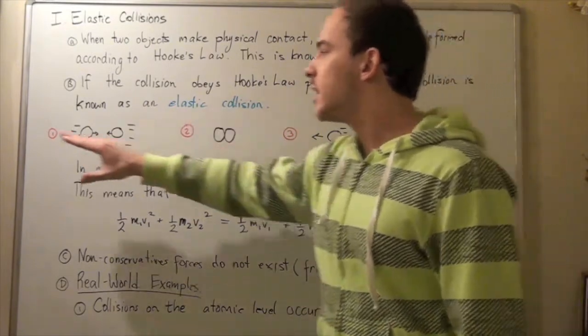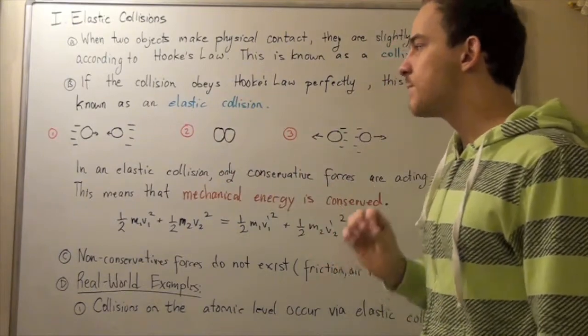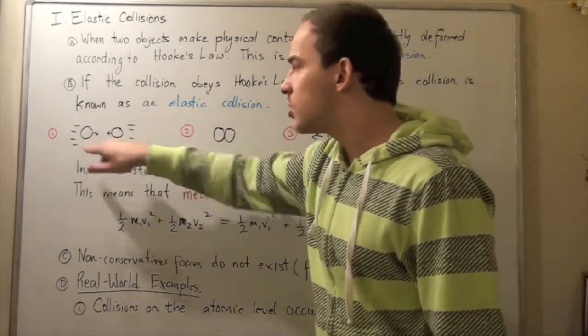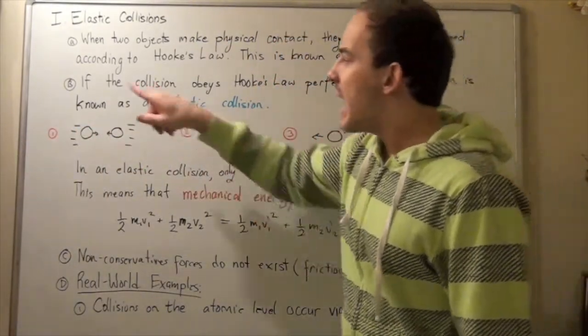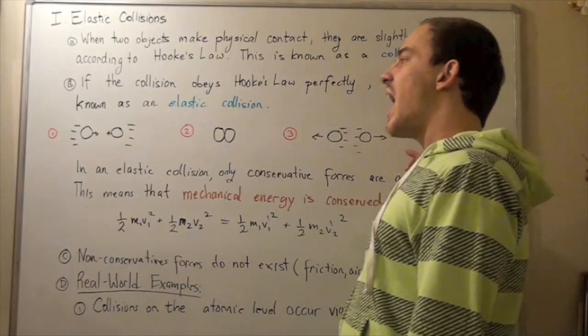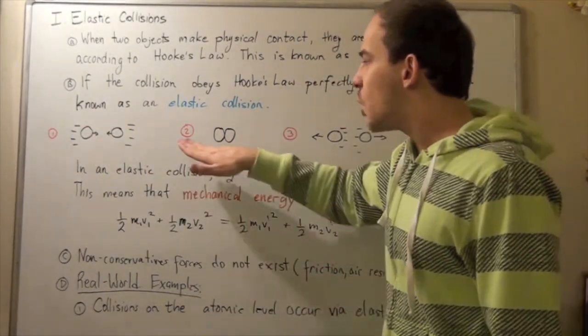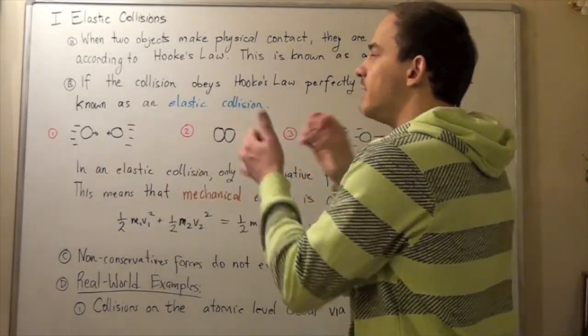Let's look at the following example that shows us what an elastic collision is. Suppose we have two particles with mass m. Particle one is going in this direction with some velocity, and particle two is going in the opposite direction with that same magnitude of velocity. What happens when they actually collide?